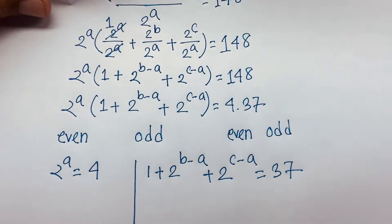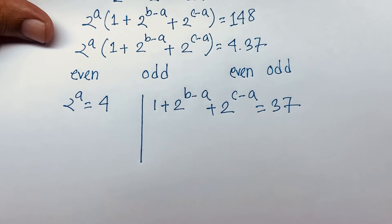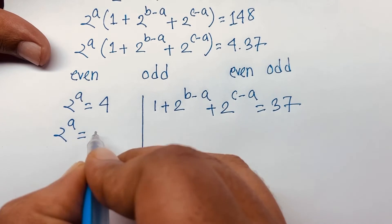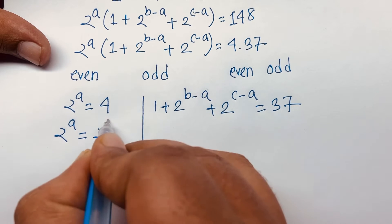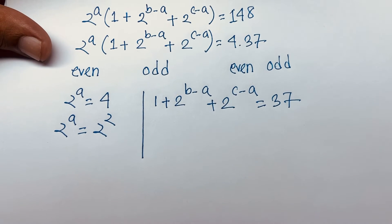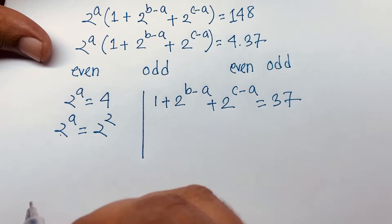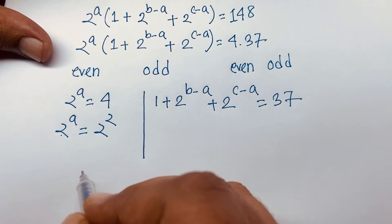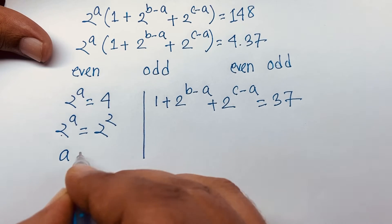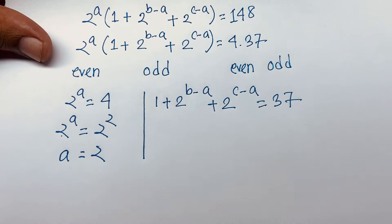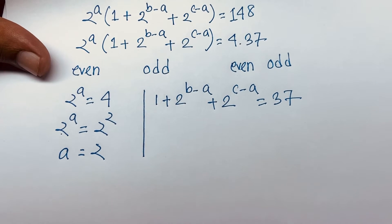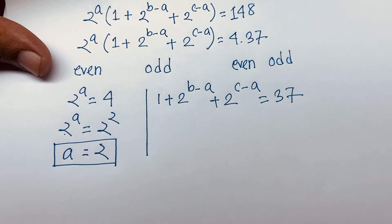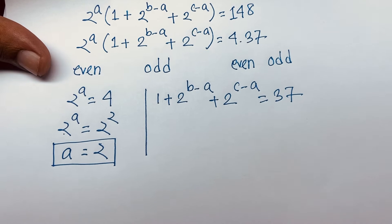Since 2^a = 4 = 2^2, and the bases are the same, the exponents must be equal. Therefore a = 2.